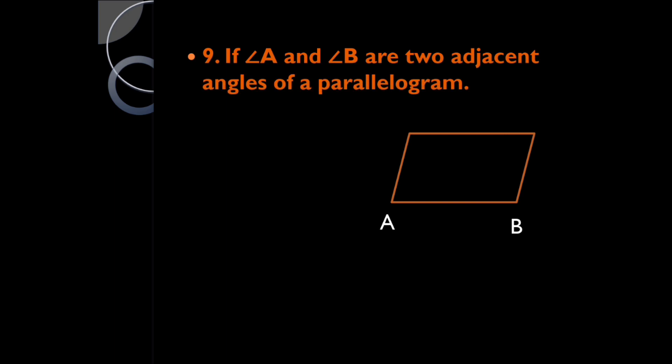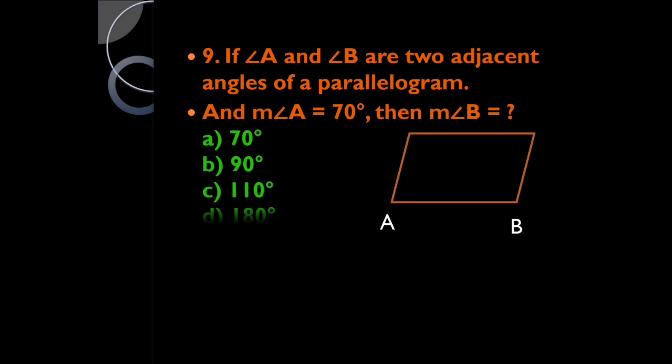If angle A and angle B are two adjacent angles of a parallelogram and the measure of angle A equals 70°, then what is the measure of angle B? It is 110°, because both angles are supplementary.